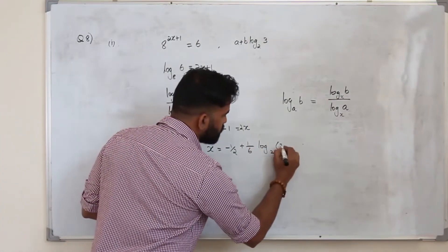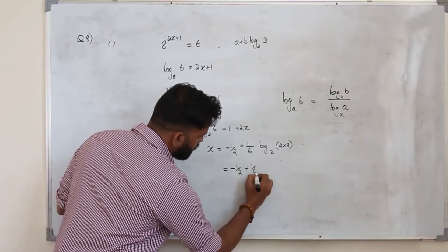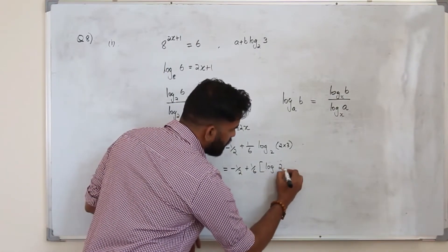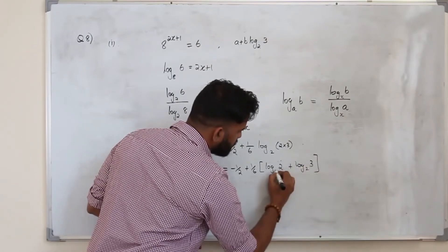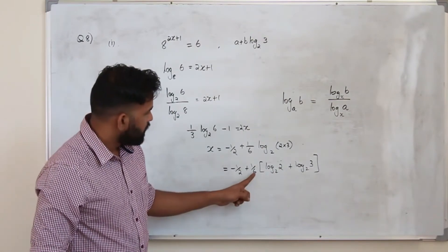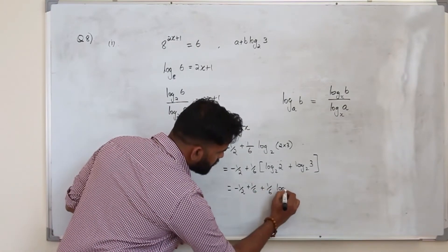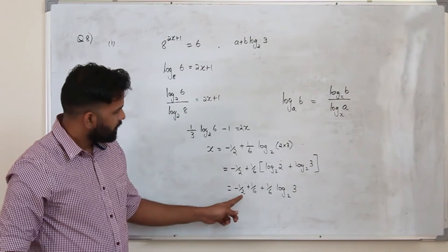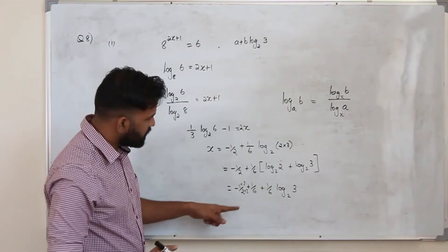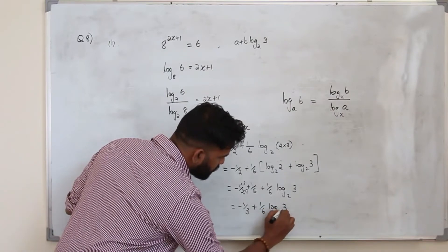You can write 6 as 2 times 3 and split them. When you split them using laws of logarithms, log(2×3) to the base 2 becomes log 2 to the base 2 plus log 3 to the base 2. The value of log 2 to the base 2 is 1. So taking 1 over 6 and multiplying through, you get minus 1 over 2 plus 1 over 6 plus 1 over 6 log 3 to the base 2. Simplifying the constants: minus 3 over 6 plus 1 over 6 gives minus 2 over 6, which is minus 1 over 3.